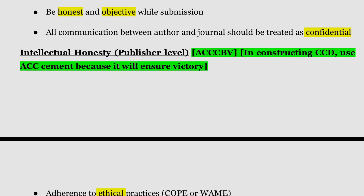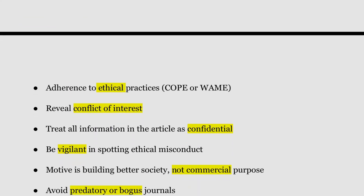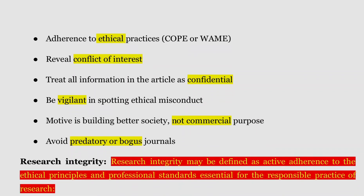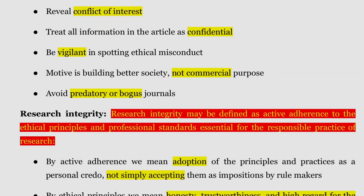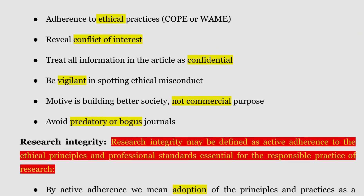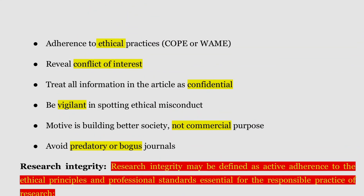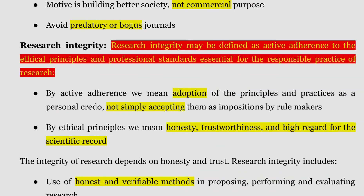At the publisher level, the publisher must adhere to ethical practices, reveal conflicts of interest, treat all information in the article as confidential, be vigilant in spotting ethical misconduct, ensure the motive is building a better society rather than commercial purpose, and avoid predatory or bogus journals.